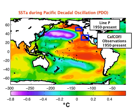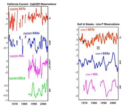An example of this comes from long-term time series observations at Line P in the Gulf of Alaska from 1950 to present, and from the California Current in the CalCOFI Observational Program, also from 1950 to present. Let's look at these observations.